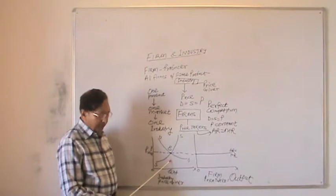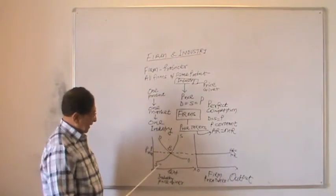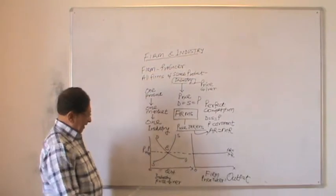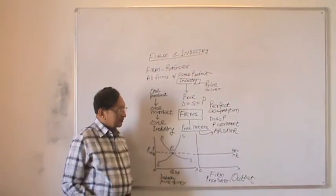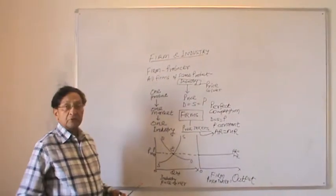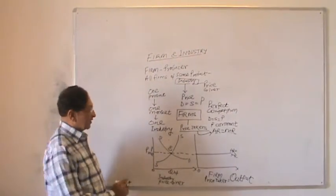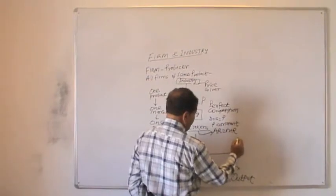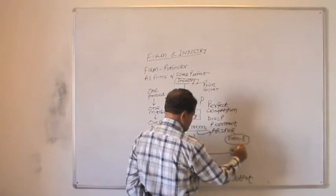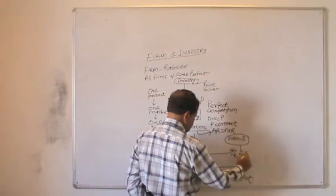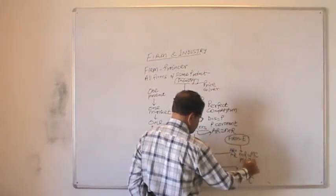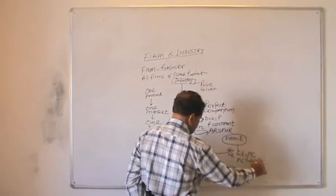This is how demand and supply intersect each other, and E is the equilibrium for the industry in general. That price is accepted by the firms, and firms will determine output on the basis of two conditions. The equilibrium of a firm depends on two conditions: number one, where marginal revenue is equal to marginal cost, and number two, marginal cost cuts marginal revenue from below.